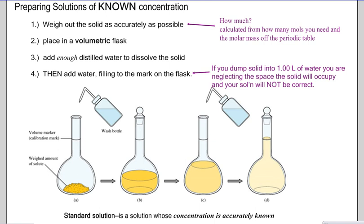Now that you know molarity, you can make your own solutions. To make a solution, take the mass of whatever you're using as the solute, figure out how many moles you need, place that mass into the bottom of a volumetric flask, dissolve it with a little water, and then fill the volumetric flask up to the line. If you don't dissolve it first, you're negating the volume of that solid. A standard solution is a solution whose concentration is absolutely known — we'll be working with this in our next lab.